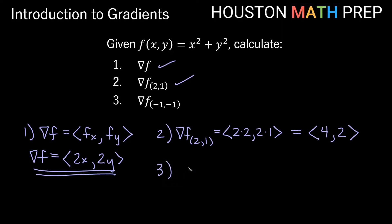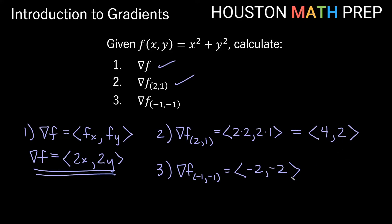For the third one, del f evaluated at (-1, -1): plugging in negative 1 for x gives 2 times negative 1 = -2, and 2 times y also gives -2. So we get the vector (-2, -2). Notice this is a different vector than at (2, 1), reflecting a different direction of greatest increase at that point.